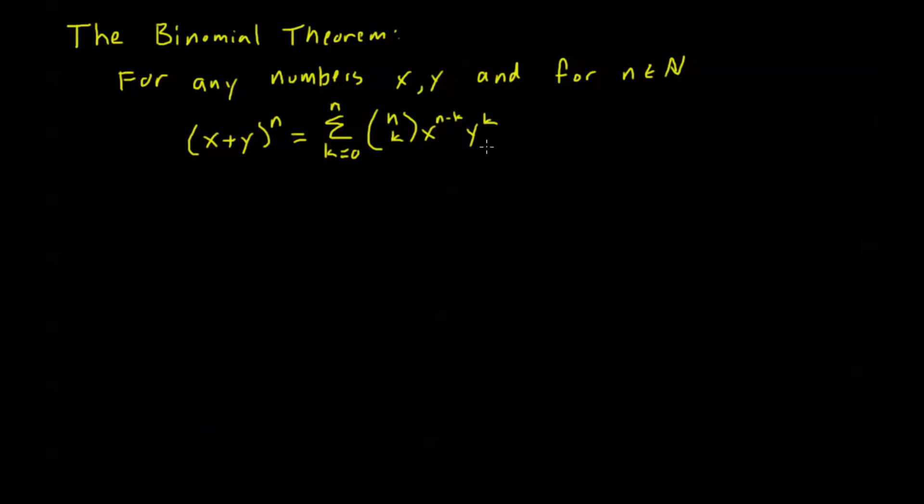Now this is going to work for any expansion, and we'll do some examples of this later, but first I want to relate this to choices. So let's consider x plus y to the n. Now we can think of this product of these factors, x plus y,